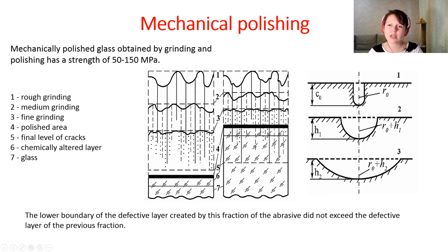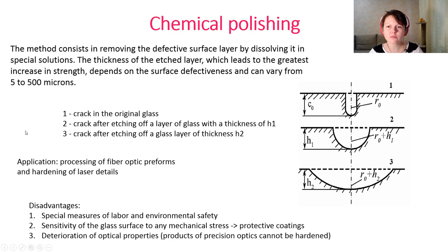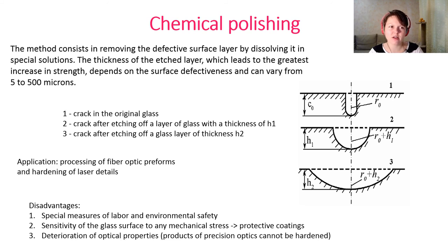Chemical polishing is similar to mechanical polishing in effect. Here, chemical polishing means etching of the surface layer by dissolving it in special solutions, and the thickness of the etched layer can vary from 5 to 500 microns. Its main application is in the processing of fiber optic preforms and hardening of laser components — for fiber optics, mechanical polishing cannot be used because it is very brittle and scratches easily, so chemical polishing is used.